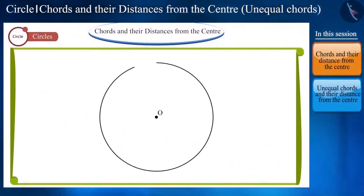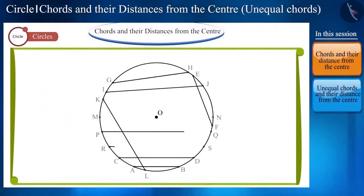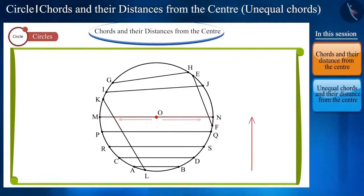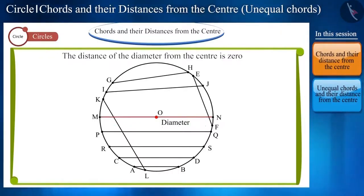Friends, a circle can have infinite chords. When we are moving closer to the center, then the length of the chord increases, but its distance from the center decreases. We know that the diameter is the longest chord of the circle, which passes through the center. This means center O is located on the diameter, so the distance of the diameter from the center is zero. And you can check it.